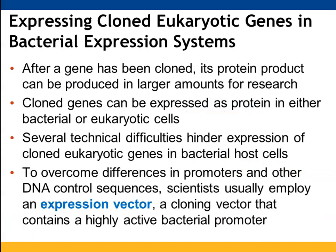Once you've found and focused on the gene of interest, you can make lots of that protein, lots of that DNA, or lots of that recombinant plasmid. This is easier to do in bacteria because their DNA is present in the cytoplasm, whereas in eukaryotic cells the DNA must pass through the nuclear membrane, making things more complex.